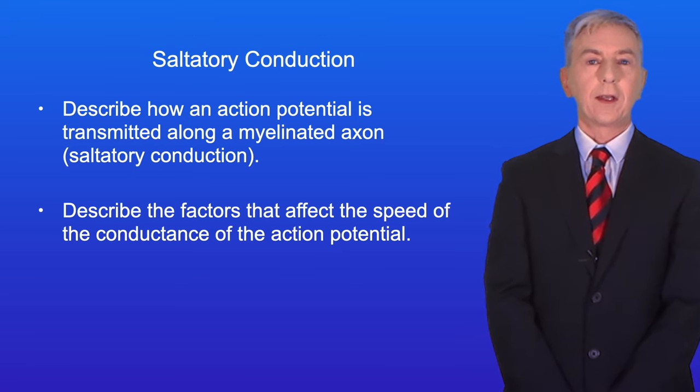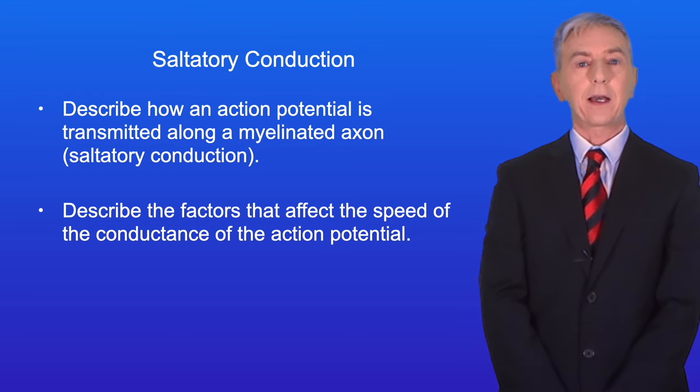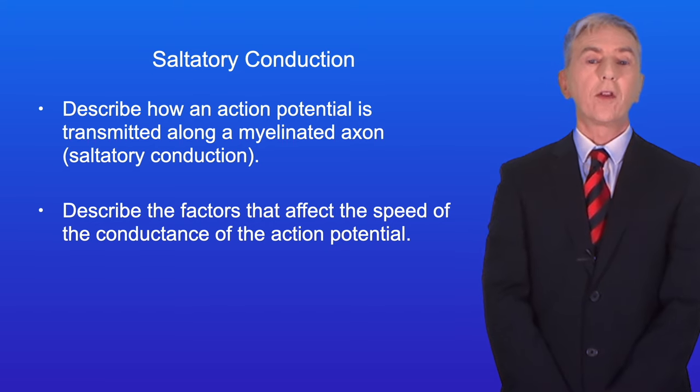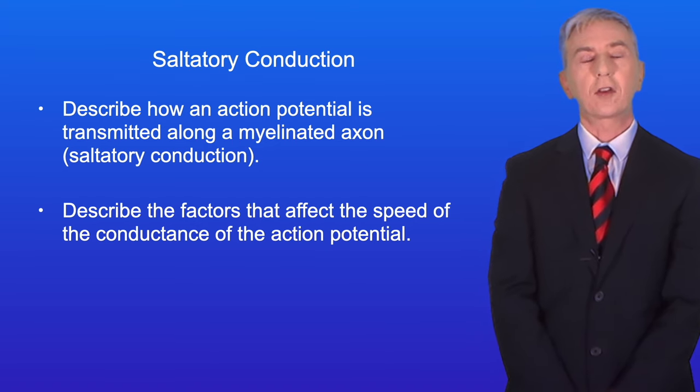Hi and welcome back to Free Science Lessons. By the end of this video you should be able to describe how an action potential is transmitted along a myelinated axon. Scientists call this process saltatory conduction. You should then be able to describe the factors that affect the speed of the conductance of the action potential.